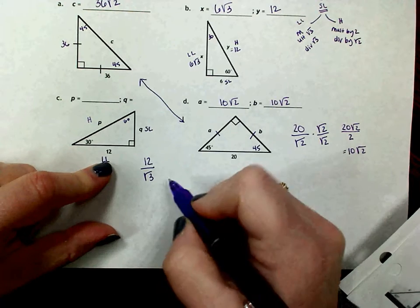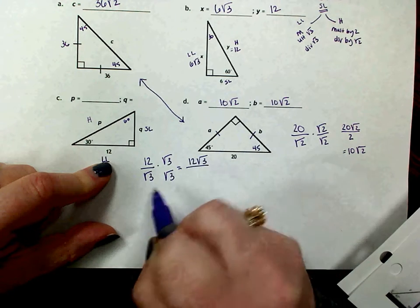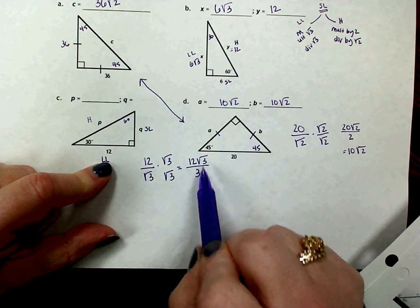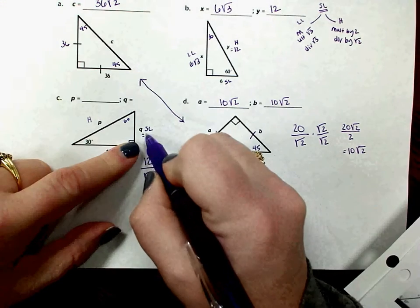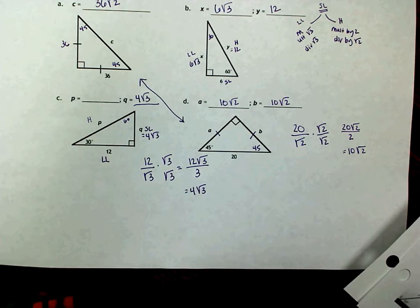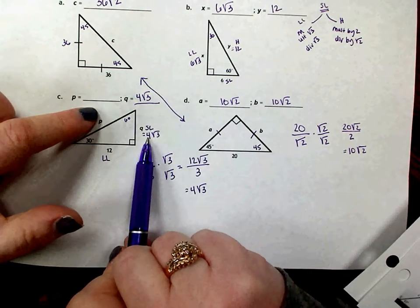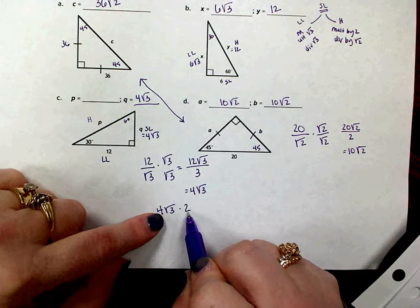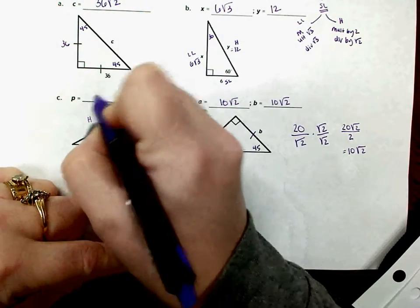We rationalize the denominator by multiplying numerator and denominator by the square root of 3. That gives 12√3 in the numerator and √3 × √3 = 3 in the denominator. The 3's can't cancel since one is under a radical, but 12 ÷ 3 = 4, so the short leg q = 4√3. Now going from the short leg to the hypotenuse, that's the 2-to-1 relationship, so we multiply 4√3 by 2. Only the numbers outside multiply — don't double what's under the radical — giving us 8√3 for the hypotenuse.